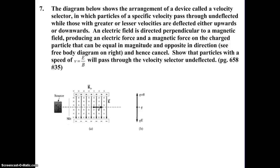The diagram below shows the arrangement of a device called a velocity selector in which particles of a specific velocity pass through undeflected, while those with a greater or lesser velocity are deflected either upwards or downwards. An electric field is directed perpendicular to a magnetic field, producing an electric force and a magnetic force on the charged particle that can be equal in magnitude and opposite direction. You can see the free body diagram pictured here on the right, and hence cancel.